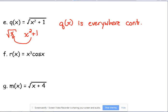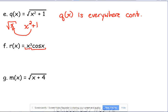Okay, f. f is a product. We're multiplying x cubed and cosine of x. x cubed is a polynomial, everywhere continuous. Cosine of x is an everywhere continuous trig function. So r(x) is everywhere continuous.